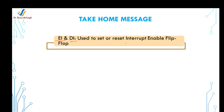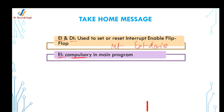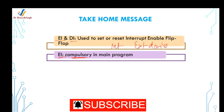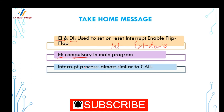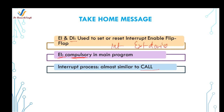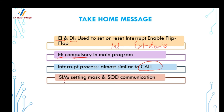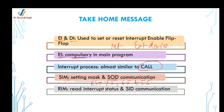Now let's review the important concepts. The EI and DI instructions are used to set or reset the interrupt enable flip-flop, which controls whether the microprocessor can receive interrupt signals from external devices. The EI instruction is compulsory in the main program if the programmer wants the microprocessor to receive all interrupt signals. The microprocessor handles an interrupt almost the same way as the CALL instruction. The SIM instruction masks RST7.5, 6.5, and 5.5 and handles serial output data communication, while RIM reads interrupt status and handles serial input data communication.